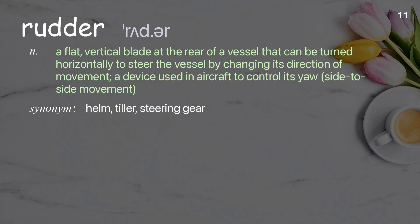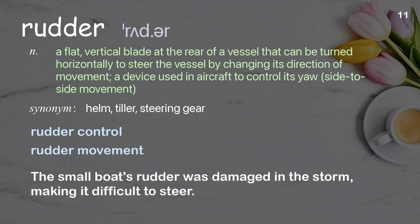Rudder: A flat, vertical blade at the rear of a vessel, that can be turned horizontally to steer the vessel by changing its direction of movement. A device used in aircraft to control its yaw, or side-to-side movement. Examples: Rudder control. Rudder movement. The small boat's rudder was damaged in the storm, making it difficult to steer.